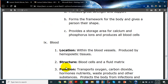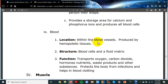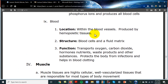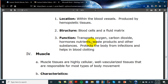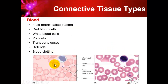The last connective tissue is blood, a liquid connective tissue with a fluid matrix. It's found in the system of closed vessels and heart chambers. Blood transports gases like oxygen, fights infection via white blood cells (immunity), and helps with blood clotting via platelets.